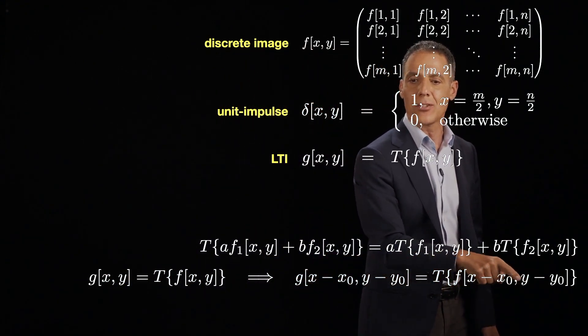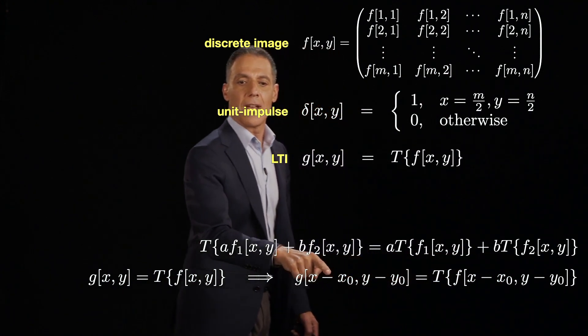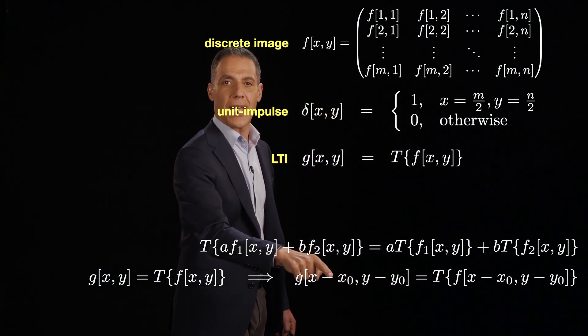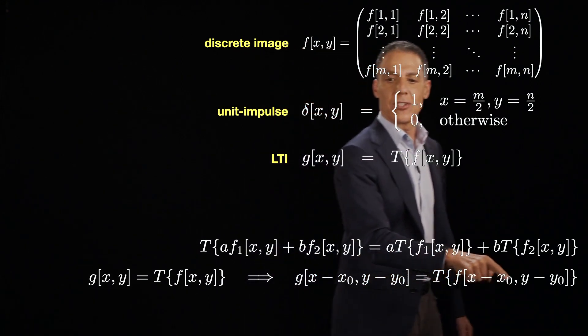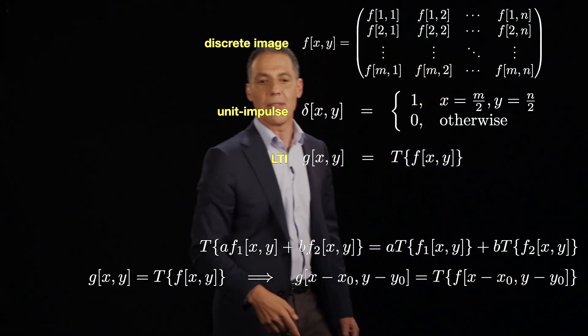And that's what this notation says here. Notice this is exactly the same as before - I just have two shifts here now, x0 and y0. I'm just saying that the output at any position with any shift, x0 and y0, is the same as shifting the input by the same amount.